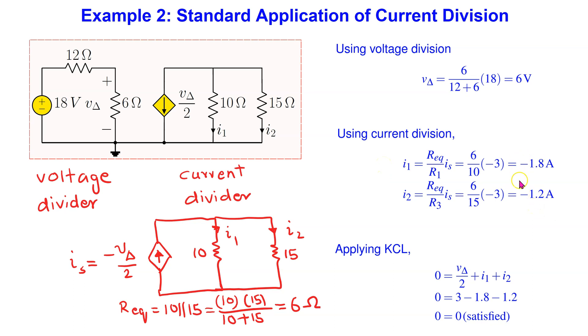To confirm that these values are correct, we can apply Kirchhoff current law to the top node and we can see that the KCL is satisfied. Thus, the solution is correct.